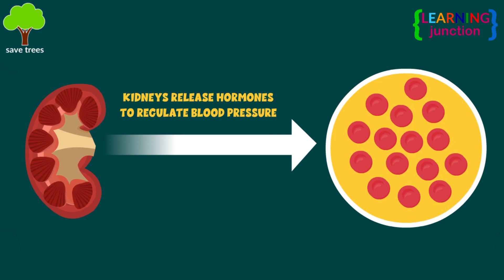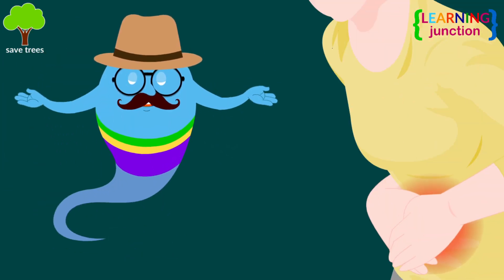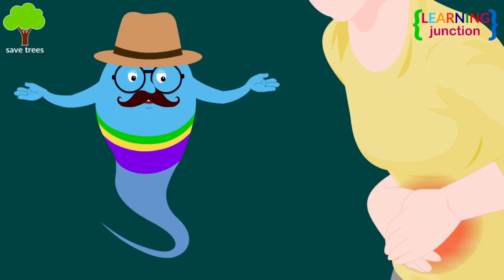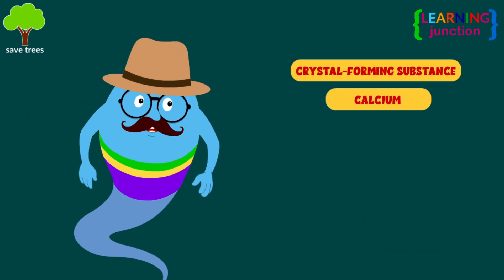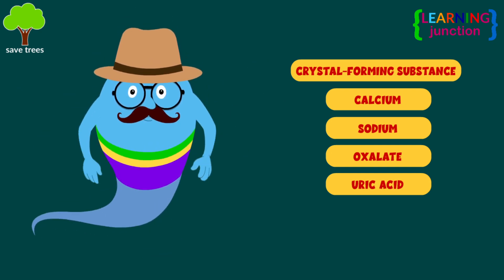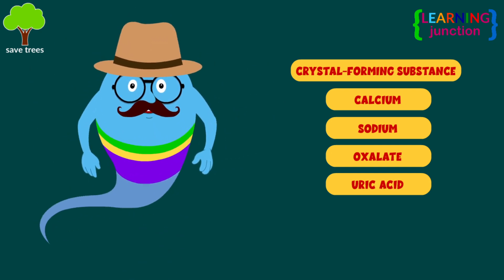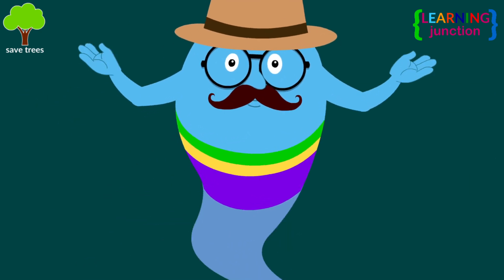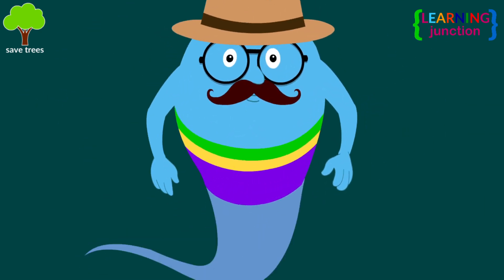Kidneys release hormones to regulate blood pressure and control the production of red blood cells. Kidney stones form when your urine contains more crystal-forming substances such as calcium, sodium, oxalate, and uric acid. Excess amounts of these particles make the urine acidic, causing the particles to bond together and crystallize.